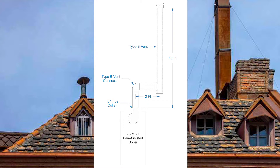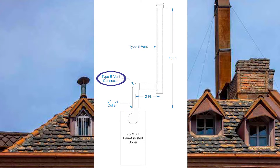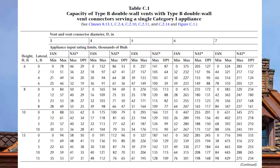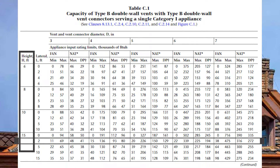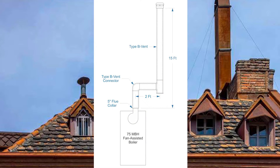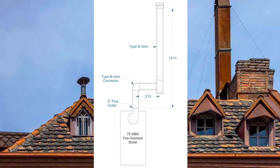For my next example I have a 75,000 BTU fan assisted furnace going into a two-foot lateral with a 15-foot vent height. There is a five-inch flue collar on this unit, and it's a double wall vent connector going into a double wall vent. So let's size this. We go back to Table C1 — single appliance, double wall vent connector. At 15-foot vent height and two-foot lateral, looking at fan min/max, three inches is not good enough but four inch is. My vent height is 15 feet, which is greater than 10, so I've met that requirement. I'm at five inches, so I can reduce by one table value — down to four inch.